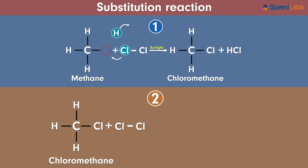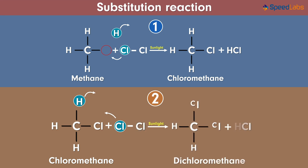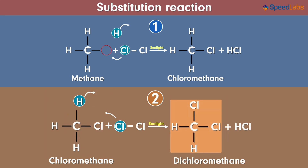Of course! Just like in the first case, another hydrogen atom in this molecule can also get replaced by another chlorine atom, and the other hydrogen atom is again taken care of by the other chlorine atom. The product obtained now will be dichloromethane. This is a substitution reaction where methyl chloride is converted to dichloromethane.